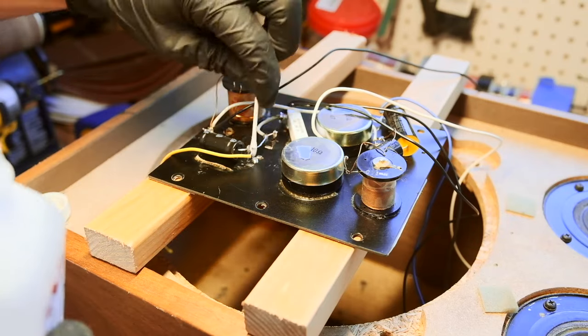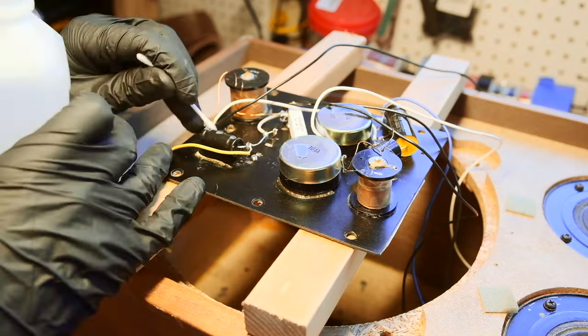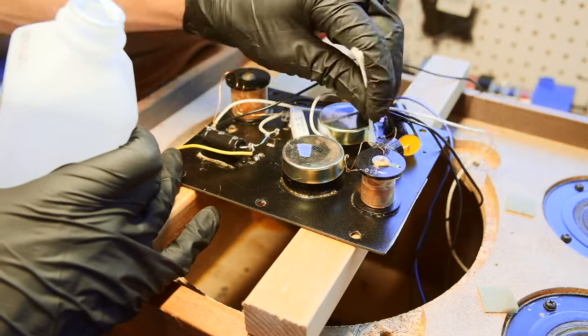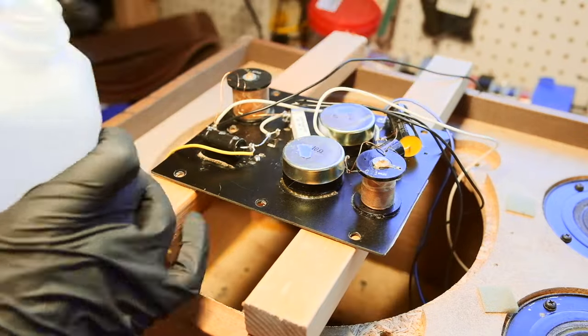Soldering leaves behind nasty burned residues that can be corrosive, especially if you use flux. It's always good to use some rubbing alcohol to clean up each solder joint to remove these residues.